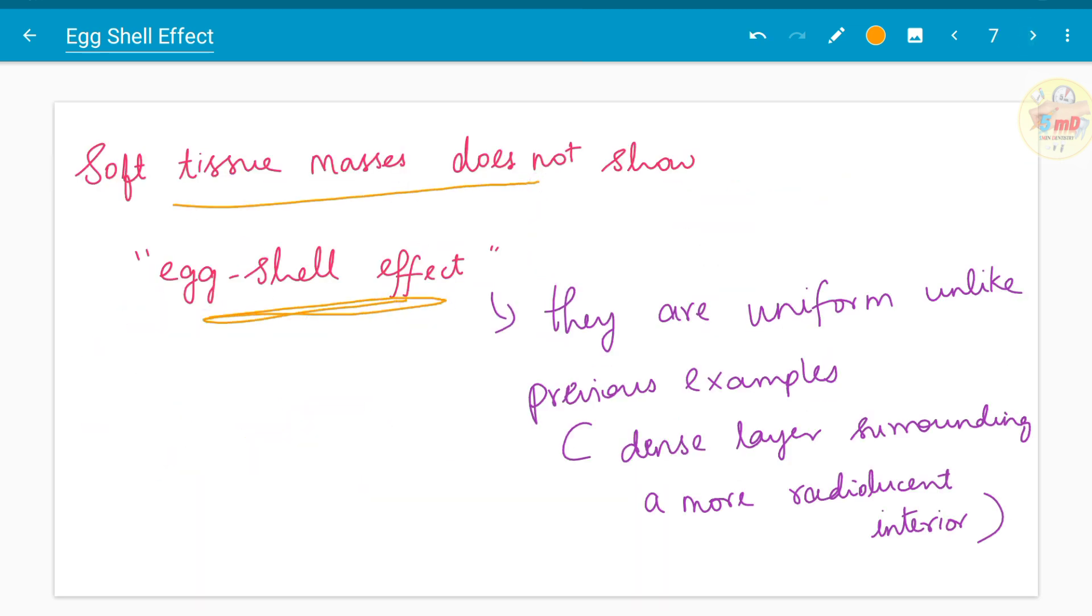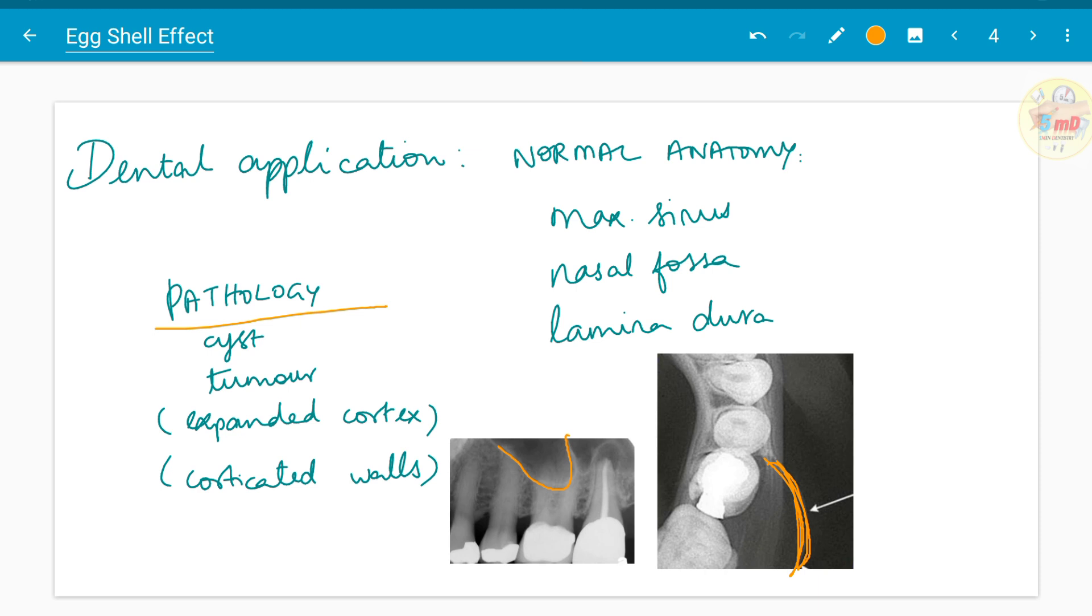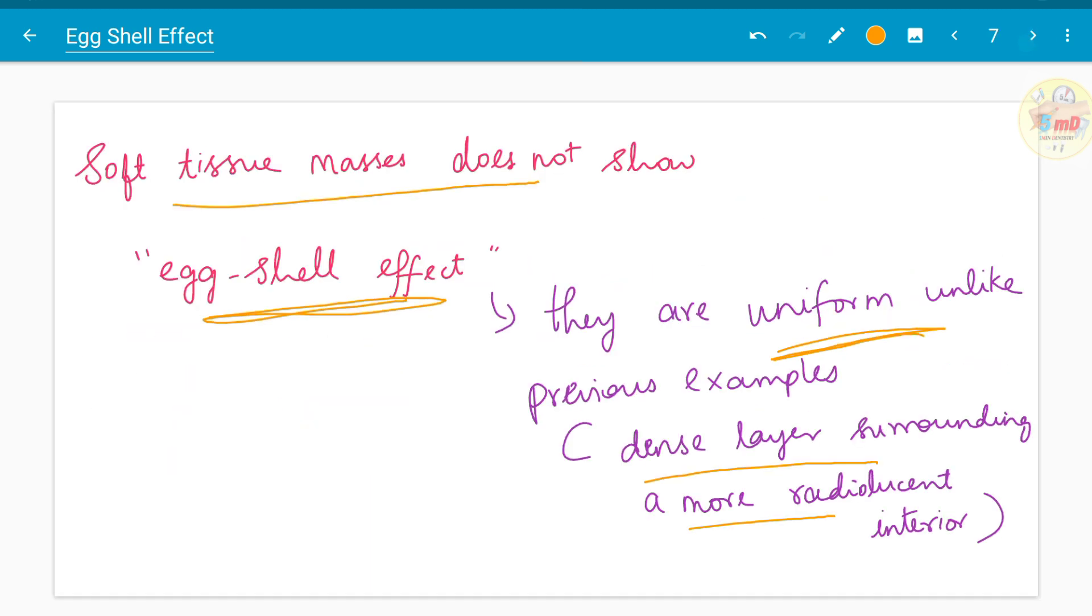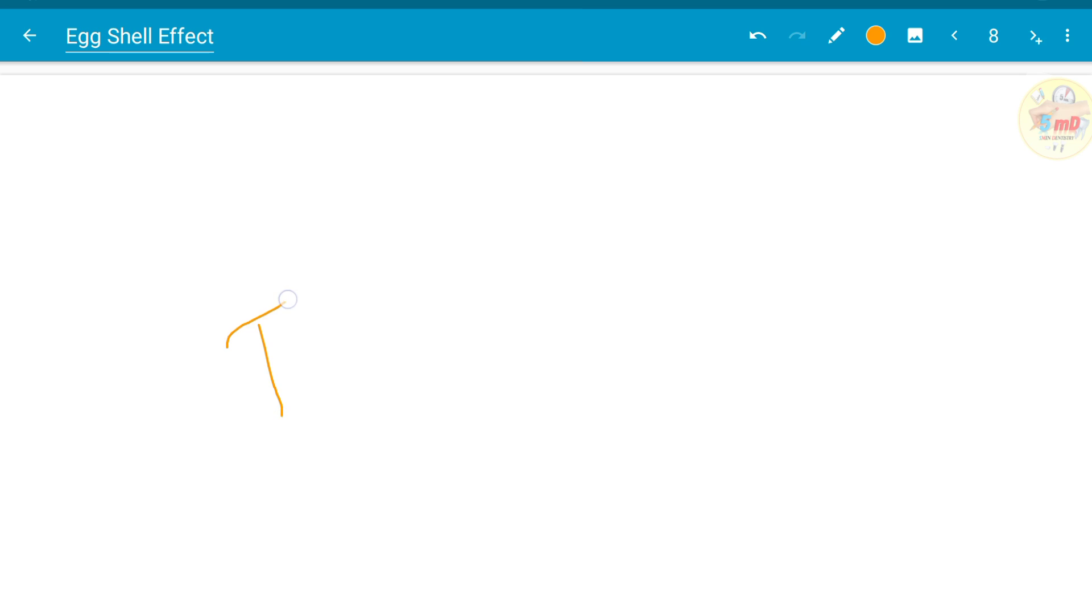Because they are uniform, unlike the previous examples where dense layers are surrounding a more radiolucent interior like the cyst or tumor, soft tissue does not show the eggshell effect. So this is about eggshell effect.